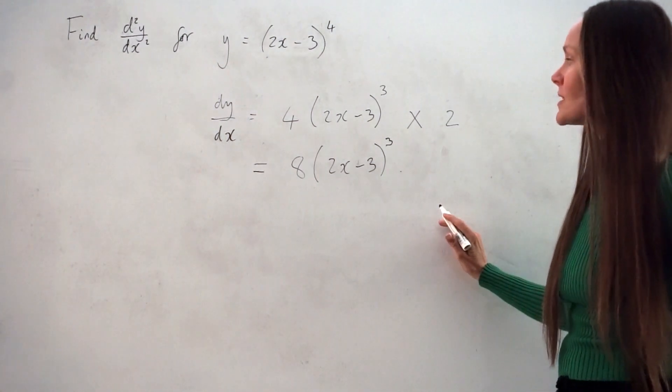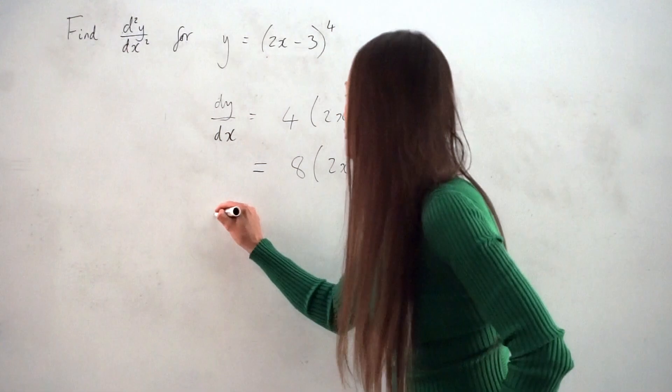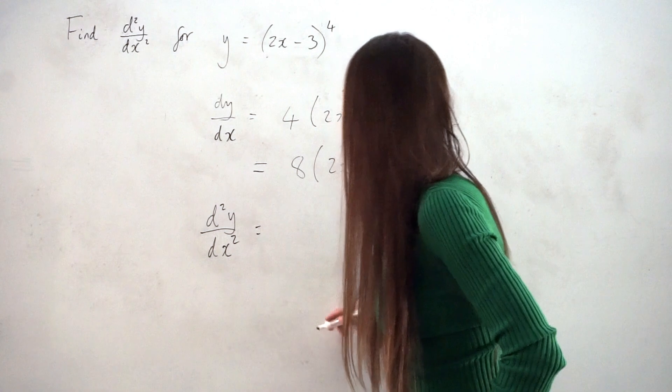So there's the first derivative. Now I have to differentiate again to find d²y/dx². And again, I'm going to use the chain rule.